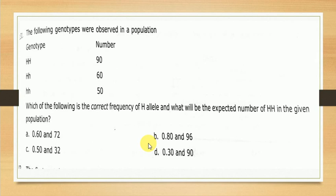Let's move on to the next question. The following genotypes were observed in a population: dominant homozygous HH, number is 90; heterozygous Hh, number is 60; and homozygous recessive hh, number is 50. They asked: which is the correct frequency of the H allele, and what will be the expected number of dominant homozygous in the given population?